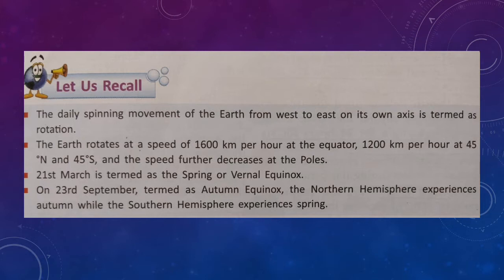In this lesson we learned about the two motions of the earth: rotation and revolution. The daily spinning movement of the earth from west to east on its own axis is termed rotation. The earth rotates at a speed of 1600 kilometers per hour at the equator, and 1200 kilometers per hour at 45 degrees north and south.